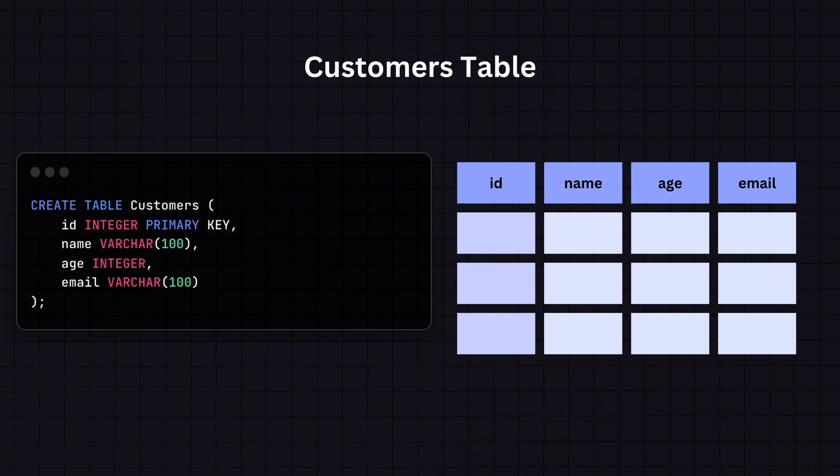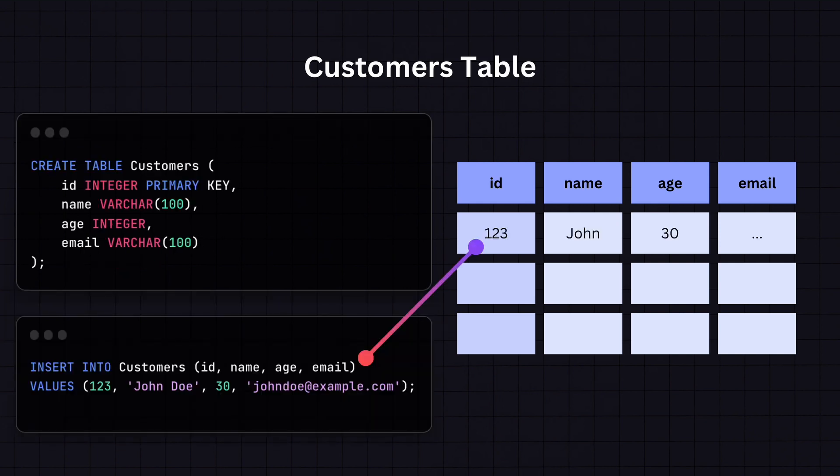Each column in a table is required to have a specific data type. For example, ID will be an integer, the name is varchar with a length of 100, the age is also an integer, and the email can also be a varchar of a certain length. Each row in a table represents a single record — for example, this query will insert one row into our database table.